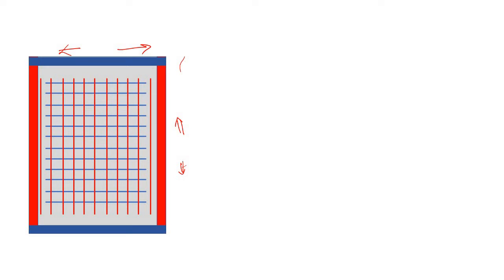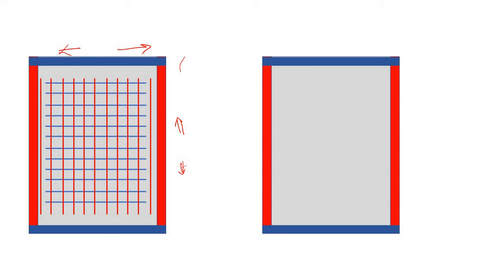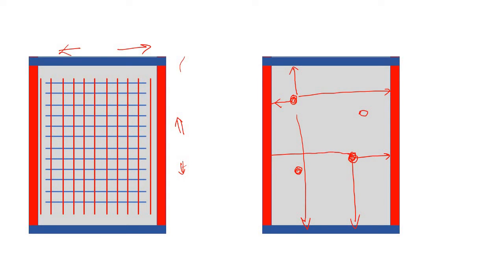To understand why this is so, you have to understand the load travel concept. Consider the slab again. If you put any load above this slab at any location, how is it going to travel back into the beam? Any load will always go to the shortest distance, or to the nearest support.